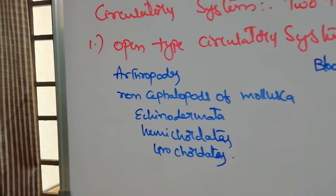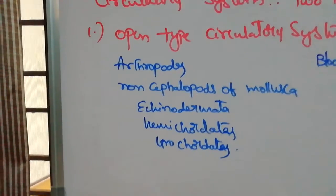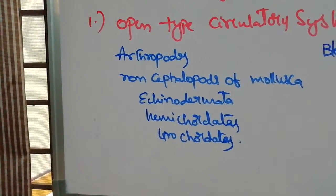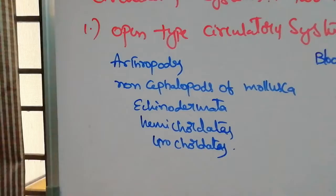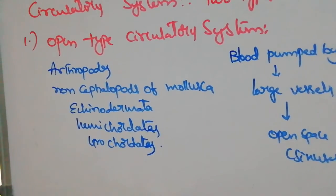What is the example for open type circulatory system? Arthropoda, non-cephalopods of molluscs, echinodermata, hemichordates, and urochordates are examples of open type circulatory system.